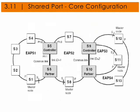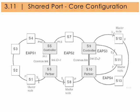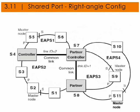Here's an example of a shared port core configuration. There are four EAPS domains shown here with two shared ports. Pause as long as you need before checking out the right angle configuration. Here's an example of a shared port right angle configuration. Four EAPS domains are shown here with two shared ports in a right angle configuration. Pause as long as you need before moving on.